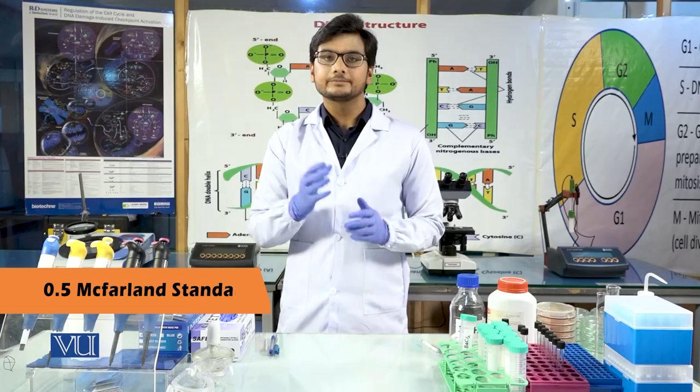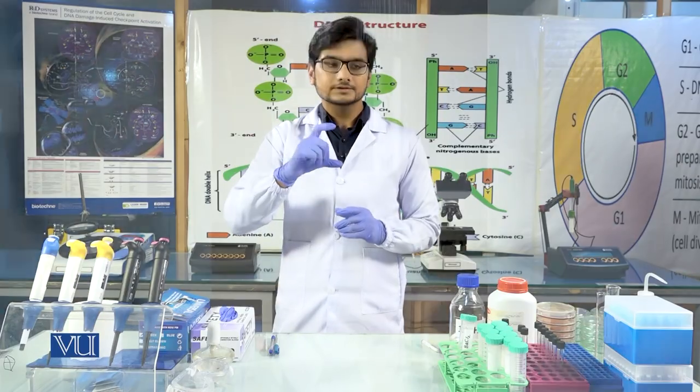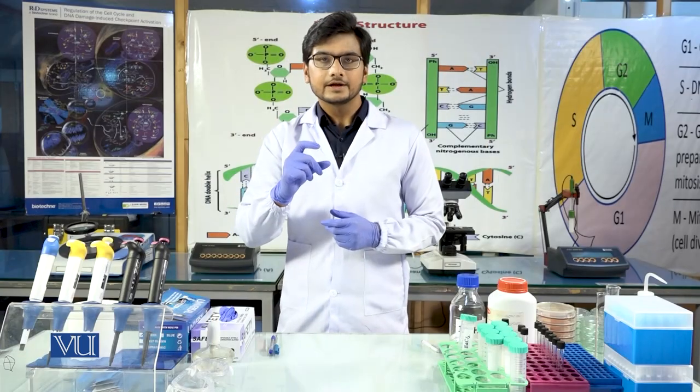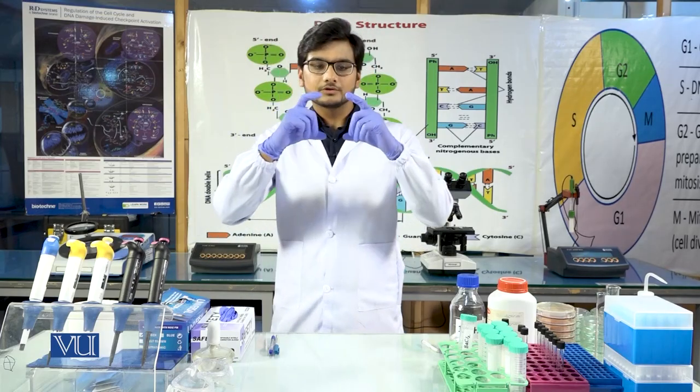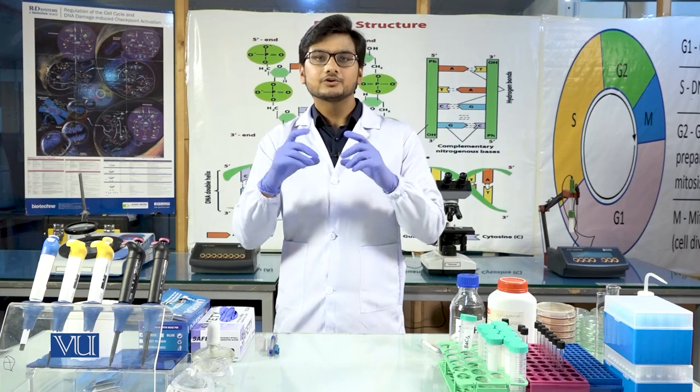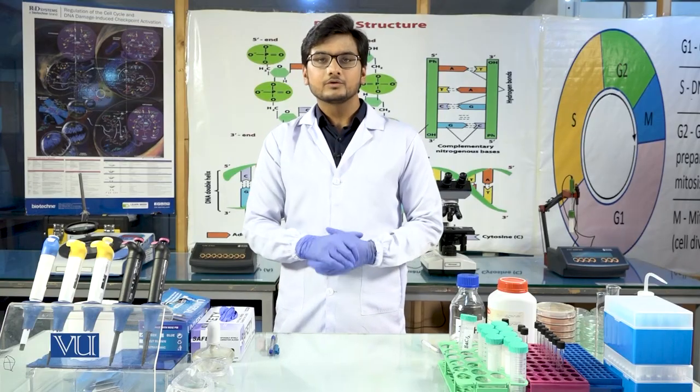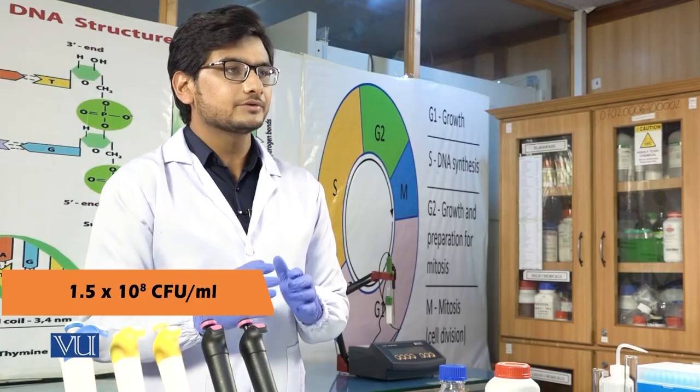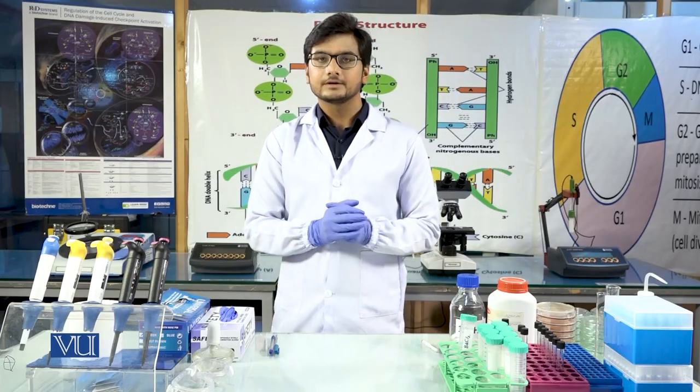In addition to that, the material is 0.5 McFarland Standard. The 0.5 McFarland Standard is a turbidity standard. We basically use it to match the turbidity of our inoculum. Inoculum means we will take sterile saline water and then we will take a wire loop and add bacterial suspensions. We will take one or two colonies and match with the 0.5 McFarland Standard turbidity.